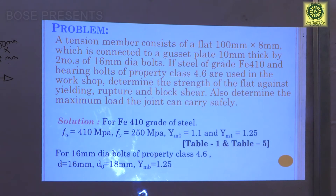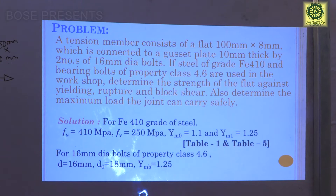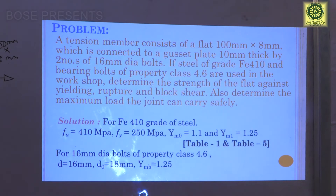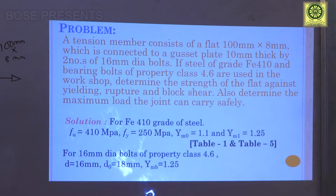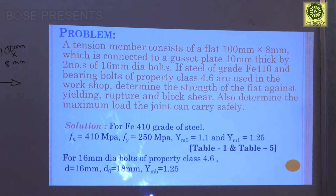The grade of steel and grade of bolt are already given. For FE 410 grade steel: ultimate stress FU = 410 MPa, yield stress FY = 250 MPa, γM0 = 1.1, and γM1 = 1.25 — these gamma values are from Table 5, and FU and FY are from Table 1. For 16 mm diameter bolts, a clearance of 2 mm is taken, so the hole diameter D0 = 18 mm. For property class 4.6 bolts, γMB = 1.25.